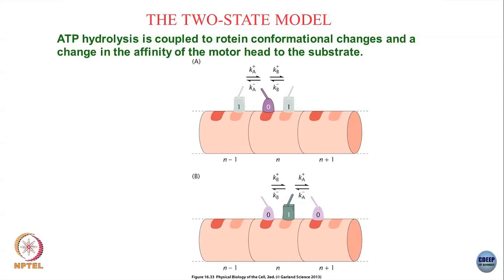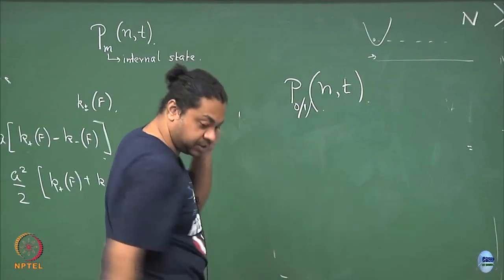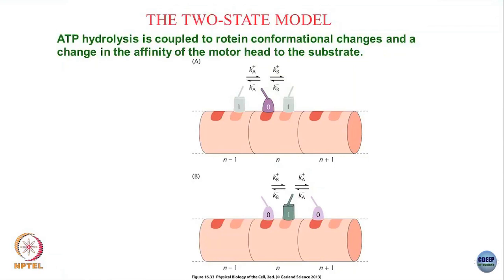Instead of saying that I simply have a probability distribution to be at site n, I now have a probability distribution to be at site n at time t, but also coupled to whether it is in state 0 or state 1. In principle, more complicated motors might have multiple conformational states coupled to, for example, needing multiple ATPs to walk, but in the simplest case at least two conformational states are needed, and you can then write down the associated master equation.